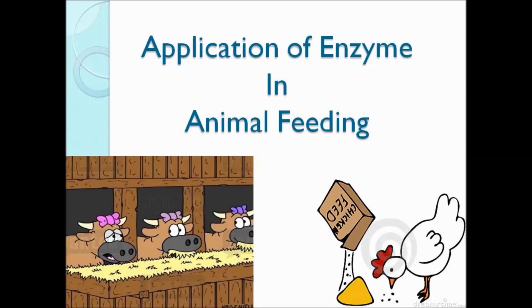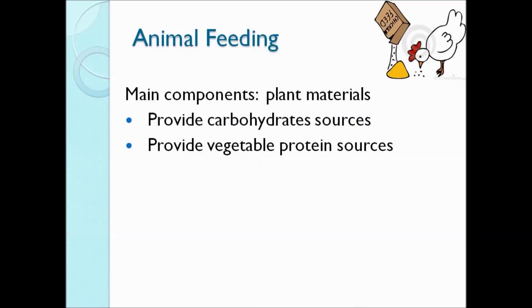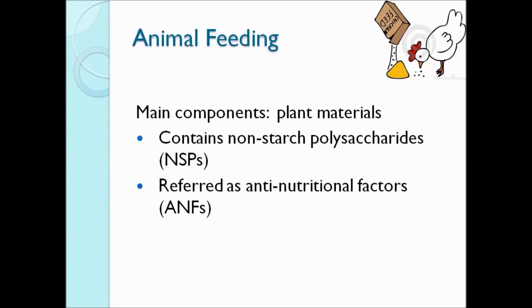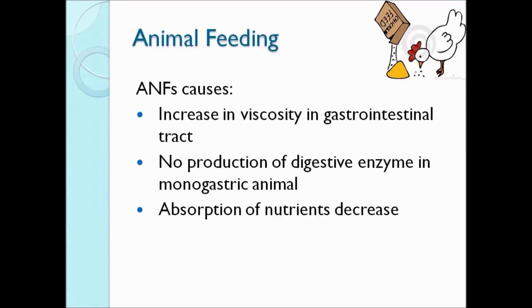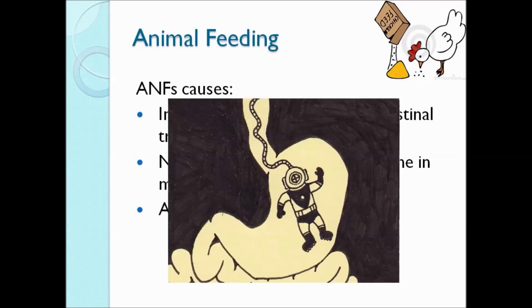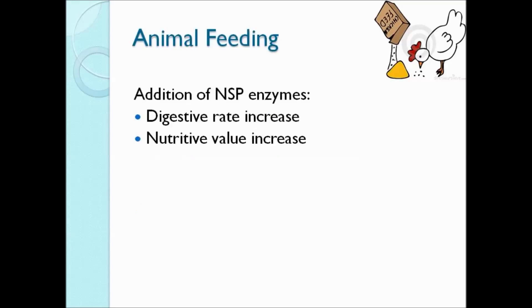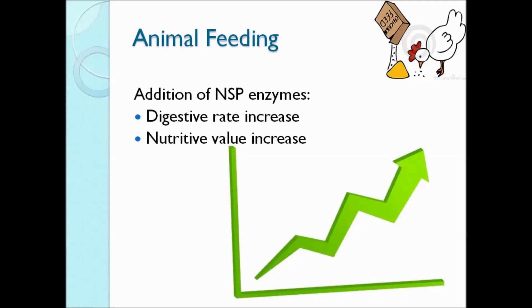Application of Enzyme in Animal Feeding: Animal feeds are plant materials which provide carbohydrate and vegetable protein sources. This food contains non-starch polysaccharides, referred to as anti-nutritional factors (ANF). ANF increase the viscosity in the GI tract, suppress digestive enzyme production in monogastric animals, and decrease absorption of nutrients. Addition of NSP enzymes allows ANF to break down, increasing the digestion rate and hence improving nutritive value.